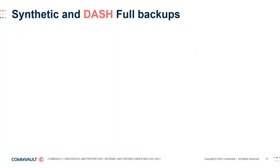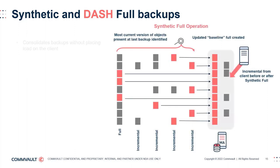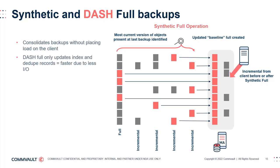We will now discuss synthetic and Dash full backups and best practices on using them. Synthetic full backups consolidate data from the latest full or synthetic full backup together with any subsequent incremental backups, instead of reading data directly from the client computer — so this operation imposes no load on the client. With deduplicated data, a synthetic full by default uses a faster variation called Dash full, where only deduplication and index records are updated without the need to read each block and generate a signature. Since the associated disk I/O is reduced significantly, a Dash full results in much faster completion compared to a regular synthetic full.